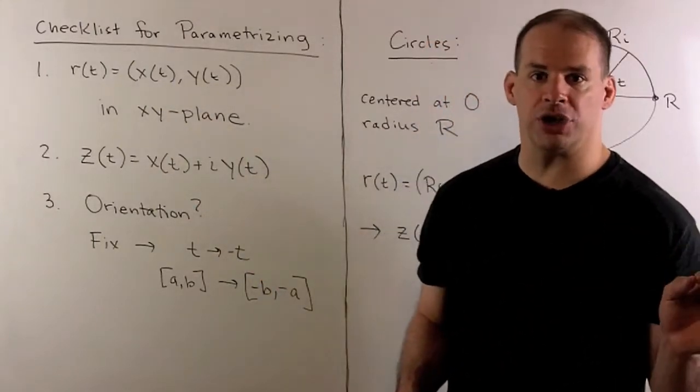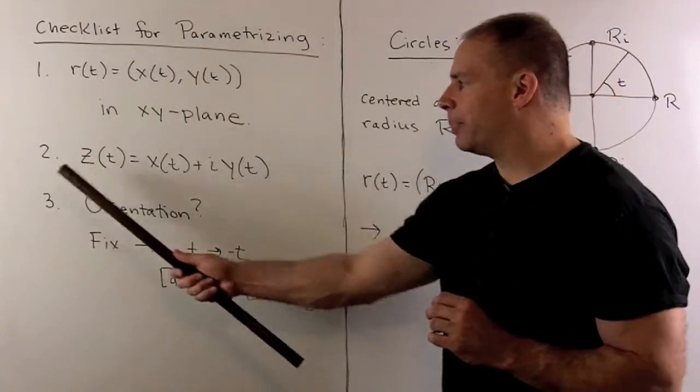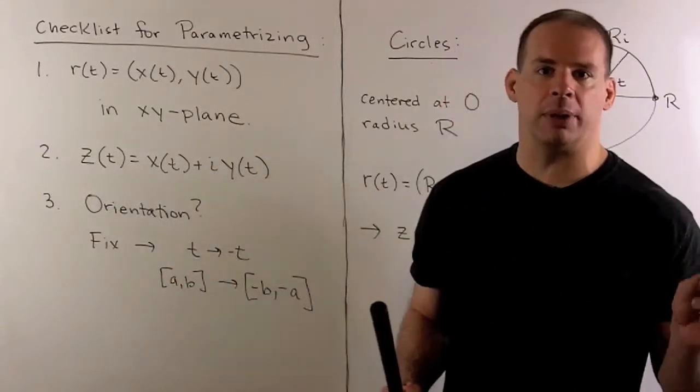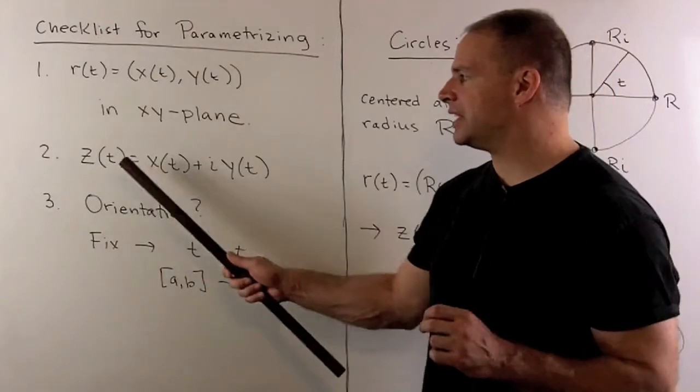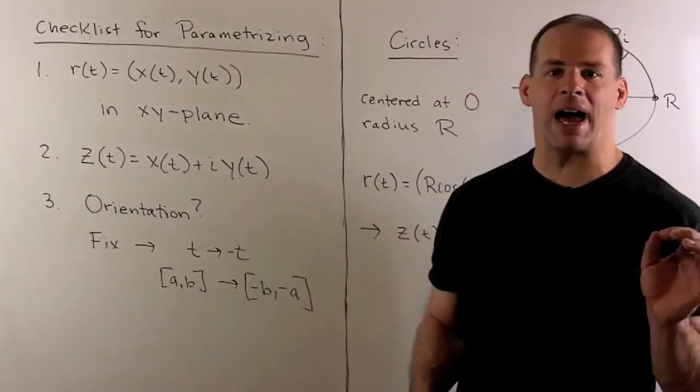Once we have those functions, to get the parametrization in the complex plane, I just set z of t equal to x of t plus i y of t.